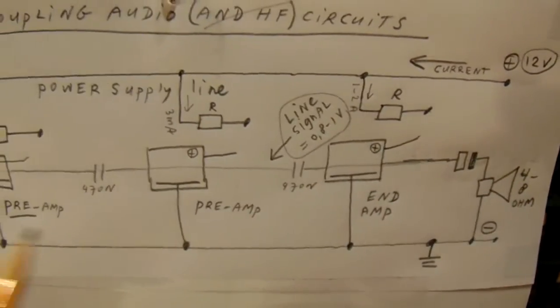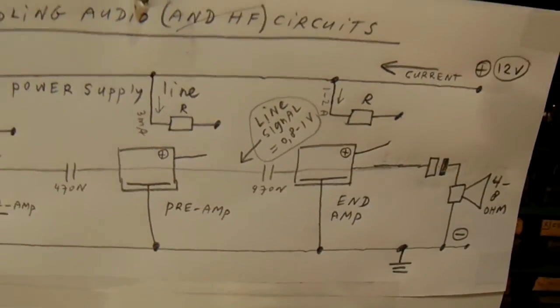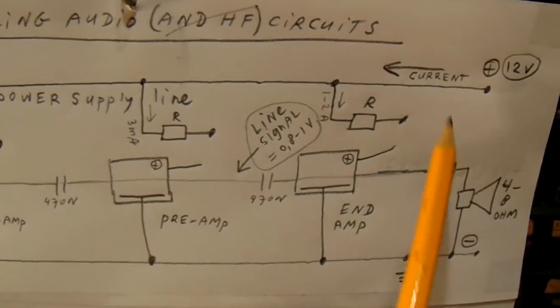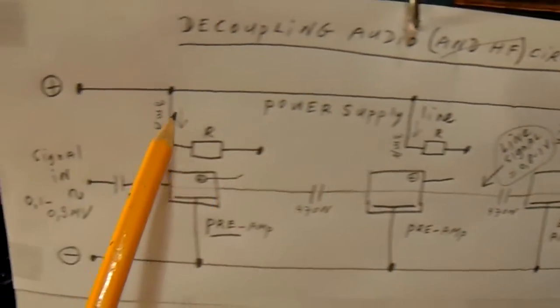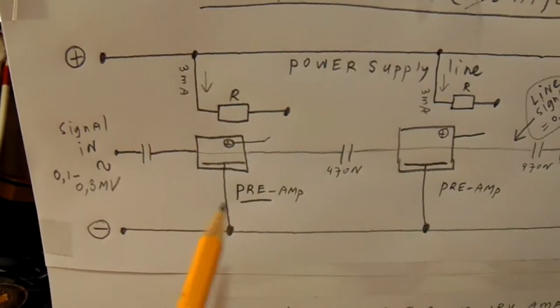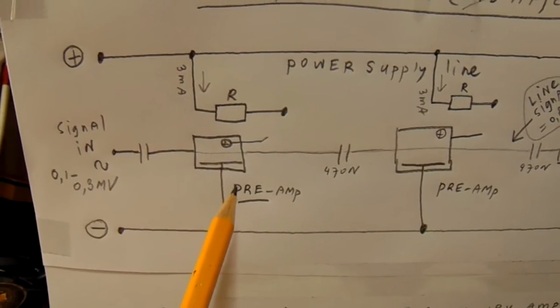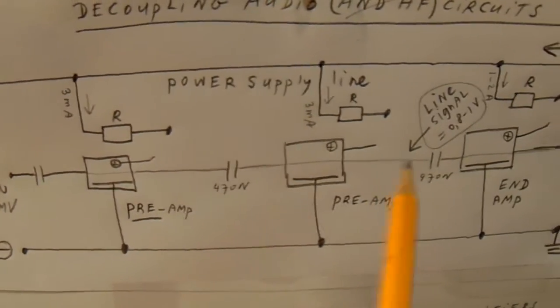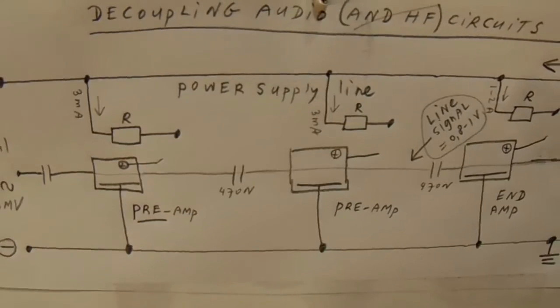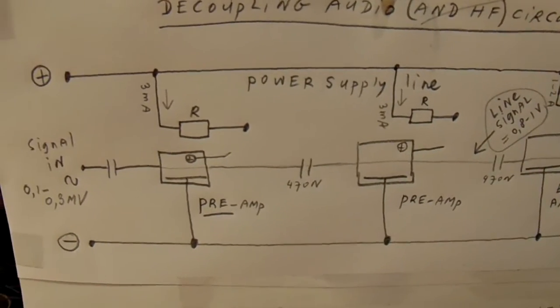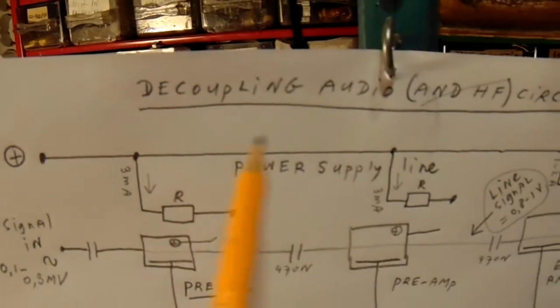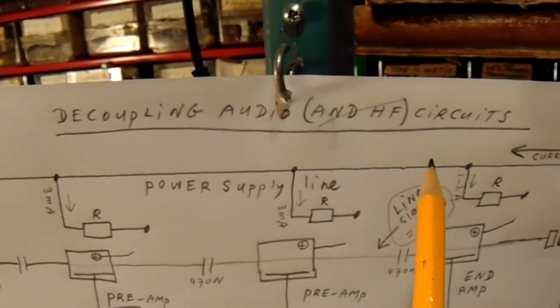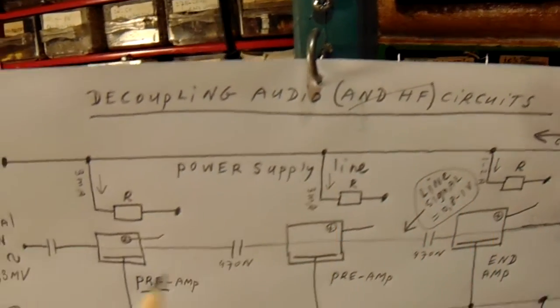But the big problem from such a circuit is that we have here a power supply lead, and in some cases the audio signal can travel on the power supply lead to the other stage and that can give a lot of problems. So that's why we need decoupling from an audio amplifier circuit.